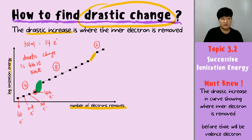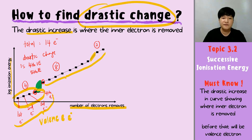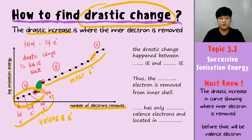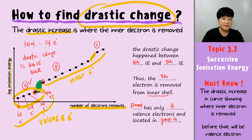The fourth electron and the fifth electron mark the place where the drastic change happened. Everything before the drastic change is your valence electron, and the rest after the drastic change is the inner electron. Therefore, the drastic change happened between the fourth IE and the fifth IE — the fifth electron is removed from the inner shell. This element has only four valence electrons and is located in group 14.